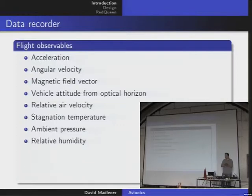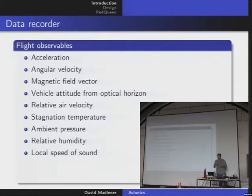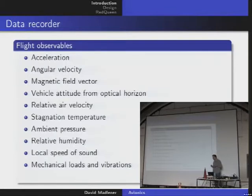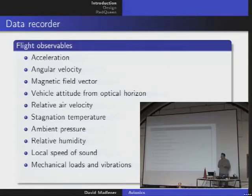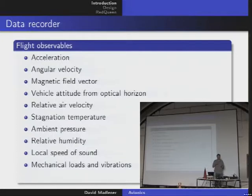Relative humidity is used to correct for any changes in the derivation of height from ambient pressure — the local speed of sound is important here too. Mechanical loads and vibration in a rocket are significant: during flight, especially when the motor is running, there will be a lot of vibration inside the system which could go beyond the design margin and cause it to break apart. It's very important to know why and when it broke apart so you can counteract it in your next design.